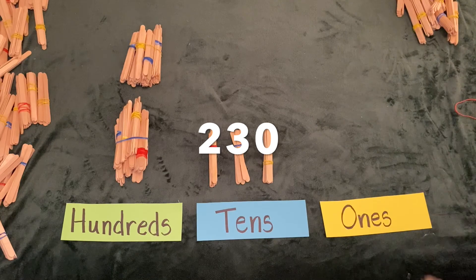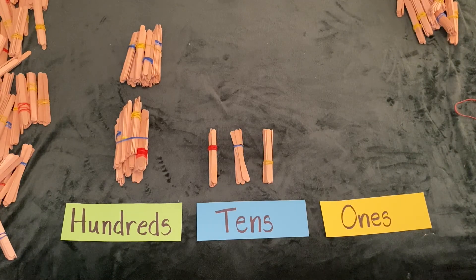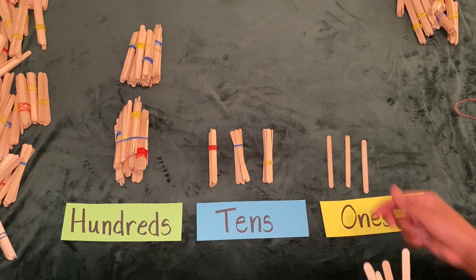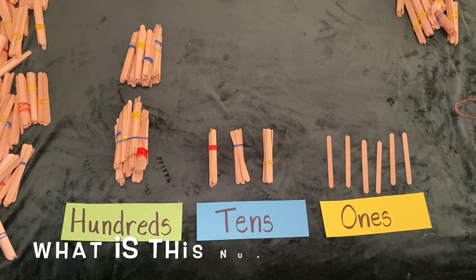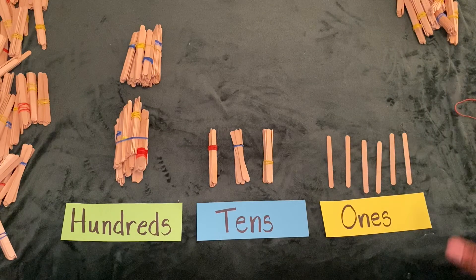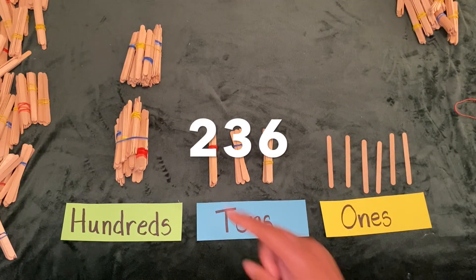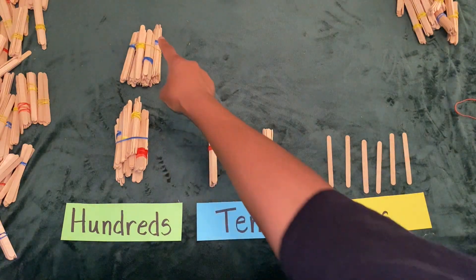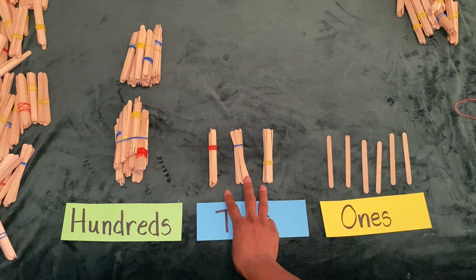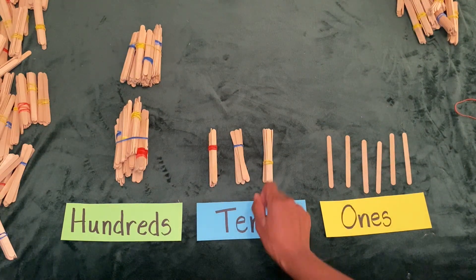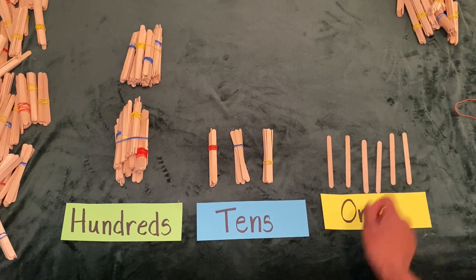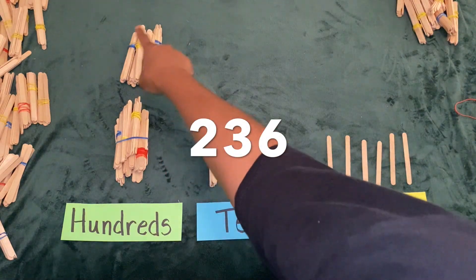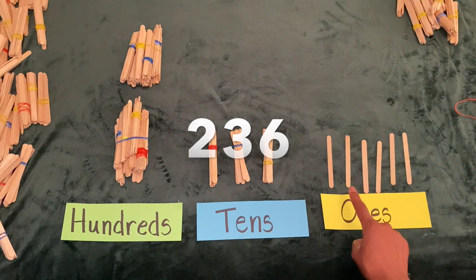Let's see what happens when I add a few ones to my board. Now that we have six more ones, can you tell me what is this number? If you said the number is 236, you're correct. We have two groups of 100 in the hundreds place — 100, 200. We have three groups of 10 in the tens place — 10, 20, 30. And we have six ones in our ones place — one, two, three, four, five, six. So all together, we have 236. Good job, friends.